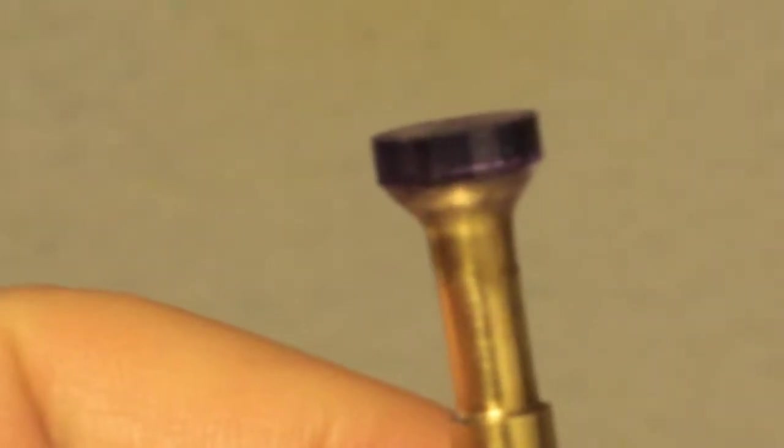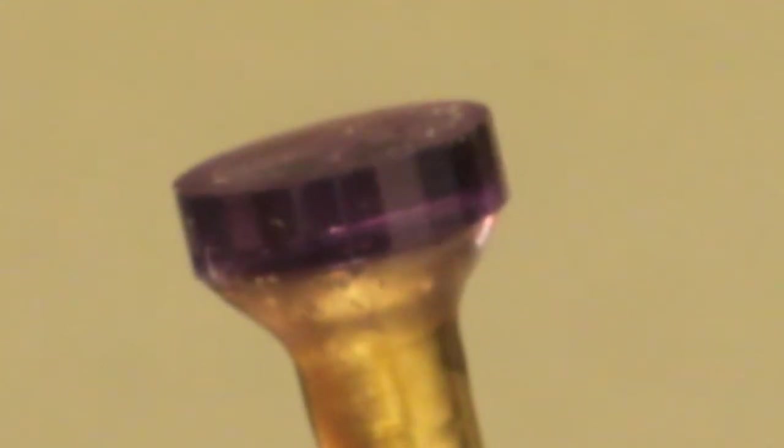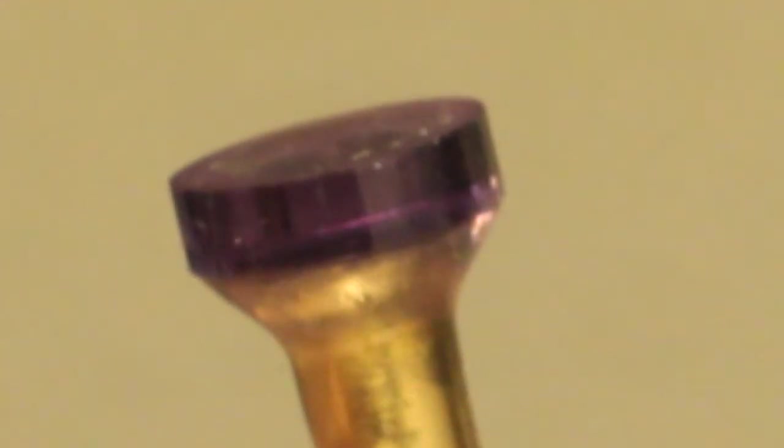All right, for our sailboat, I've gone ahead and polished the girdle. And now we'll finish cutting the rest of the pavilion. Now that the girdle's all polished up, it's going to be about 10 millimeters in size. So now we'll work on the rest of the pavilion.